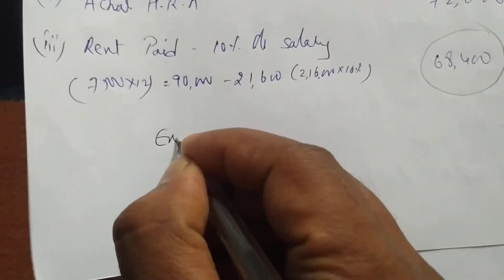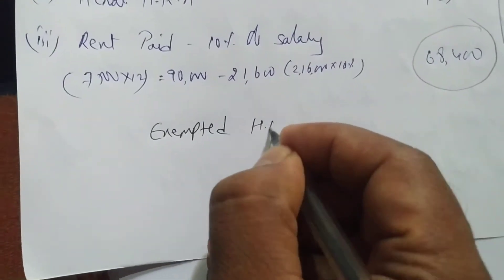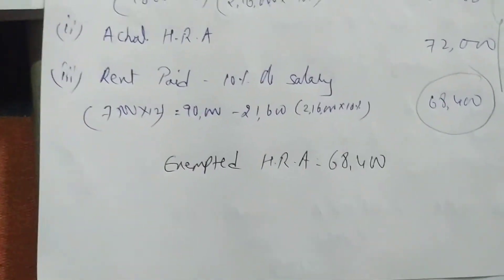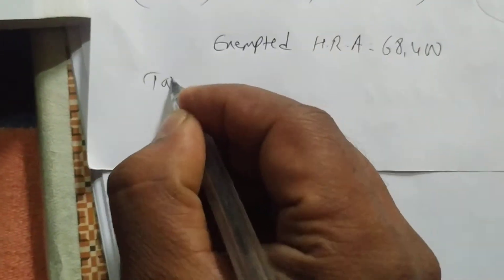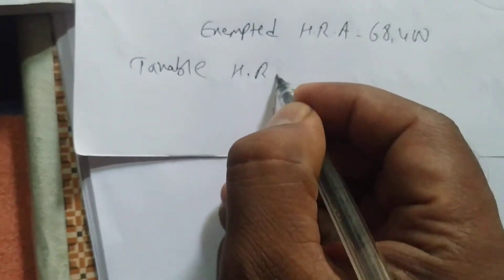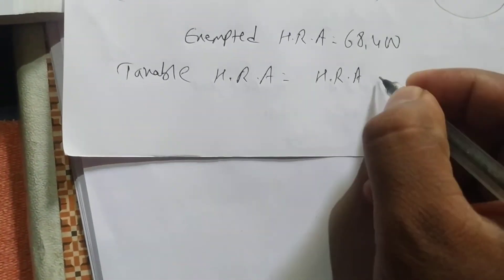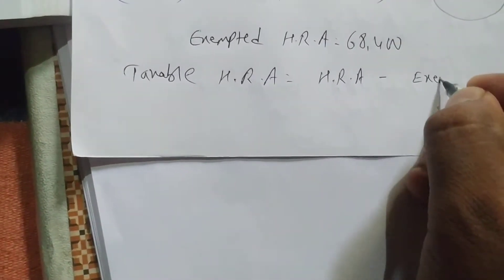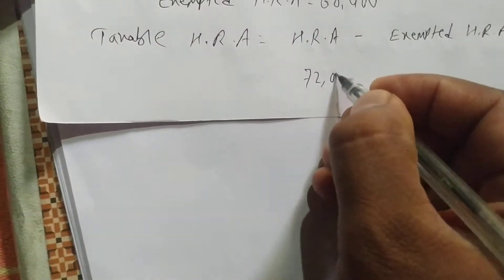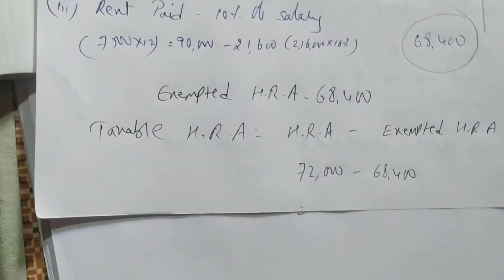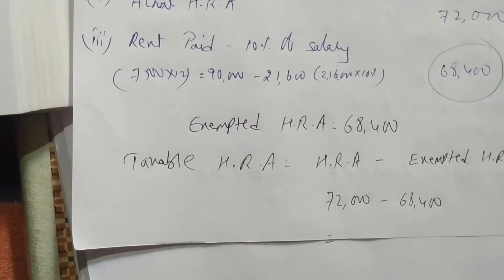Exempted HRA is 68,400. Now we find taxable HRA. Taxable HRA equals actual HRA received minus exempted HRA. HRA received is 72,000 minus exempted 68,400.